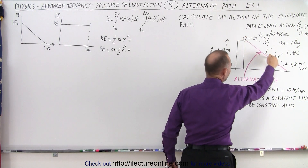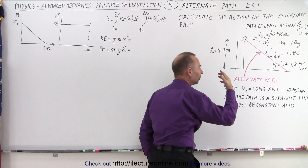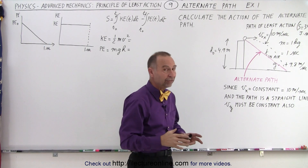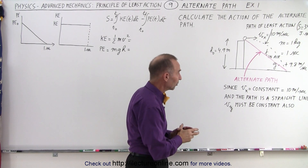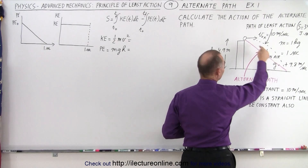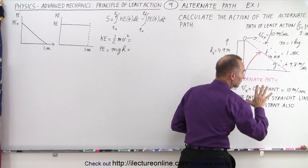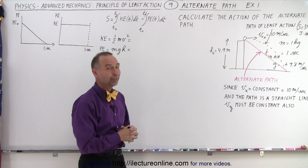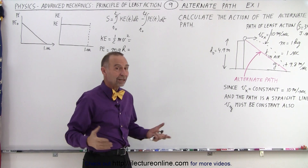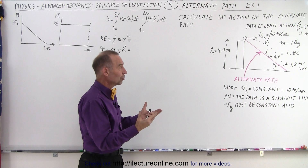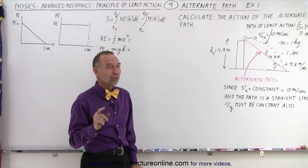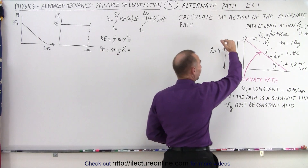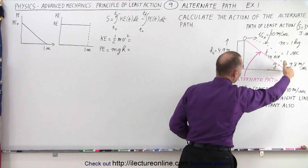So what we're going to do now is take an alternate path — this path right here. Since that looks like a straight line path, the velocity in the x direction must be constant, and the velocity in the y direction must be constant. The restrictions are that the path takes the exact same amount of time, one second, and that we end and start in the very same location. You would think that traveling the straight line path would be more desirable since you cover less distance in the same amount of time, but that's probably not the case, because we know that any projectile thrown out sideways will follow the curved path instead of that straight path.